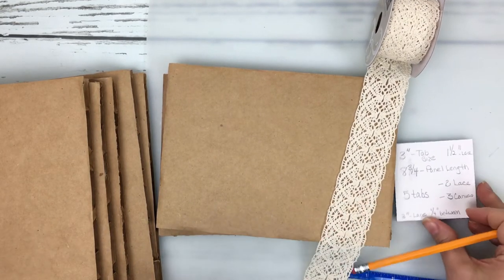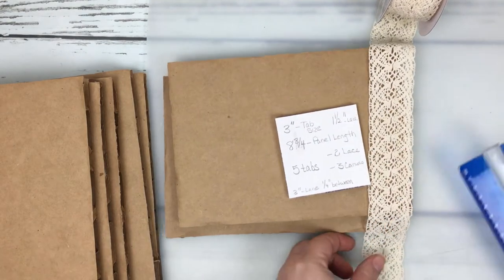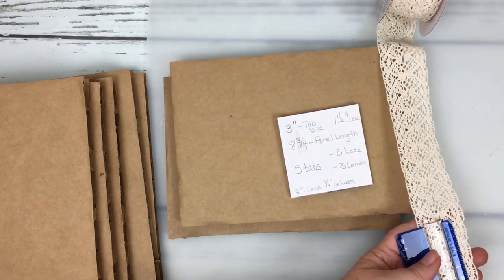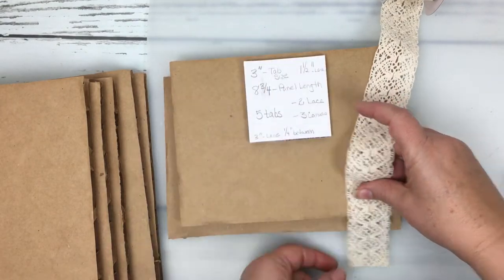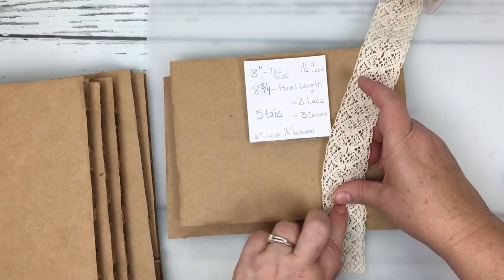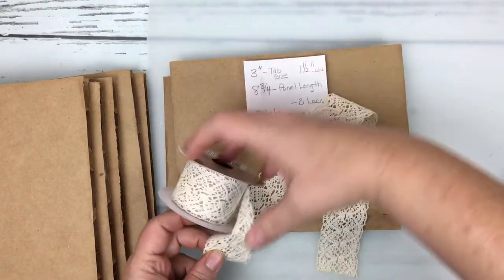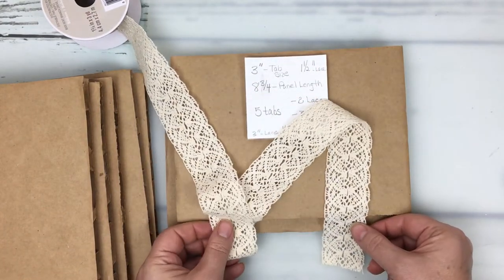I've chosen to go with two of the lace and three of the canvas and I always suggest that when you're doing a tab binding you always go with an odd number of tabs and you always start with your strongest to the outside edge, your top edge and your bottom edge.